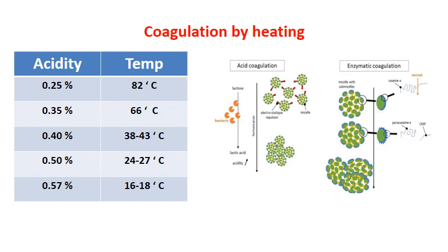Coagulation has a direct connection between acidity and temperature. If acidity is less, coagulation happens at a higher temperature. At 0.25% acidity, the coagulation temperature is 82 degrees Celsius. At 0.35% it is 66 degrees. At 0.4% it is 38 to 43 degrees. At 0.5% it is 24 to 27 degrees Celsius. At 0.57% acidity, coagulation can happen at 16 to 18 degrees Celsius — so at very high acidity, milk will coagulate at normal temperature.